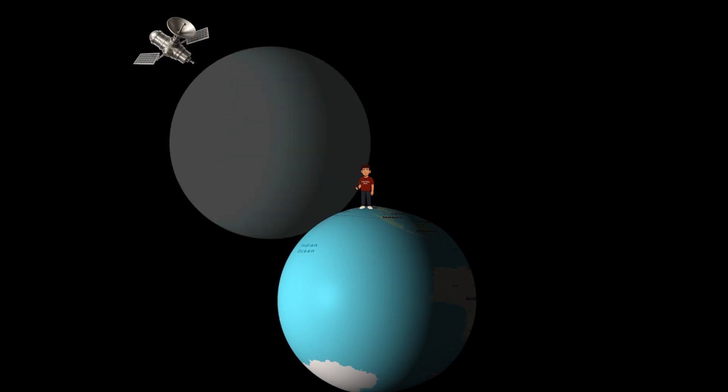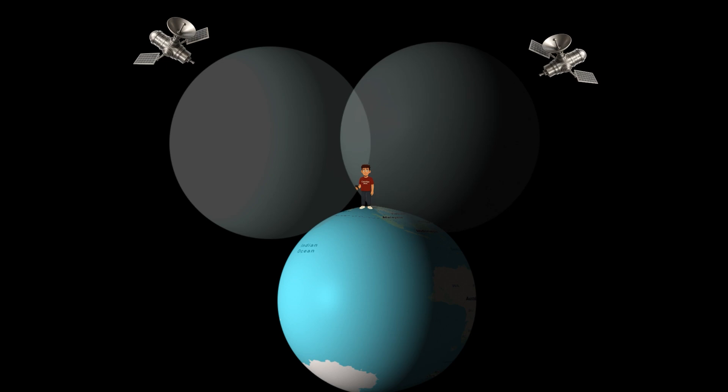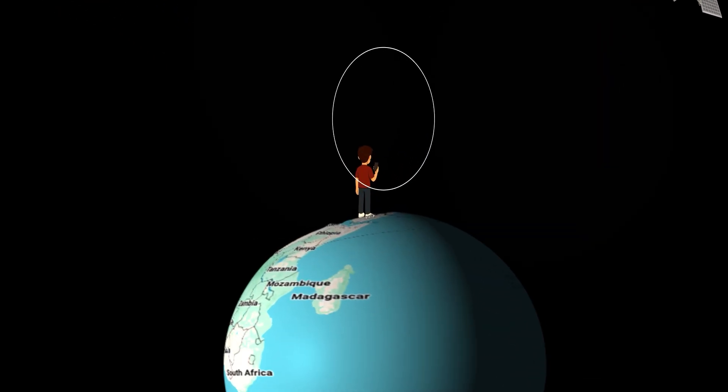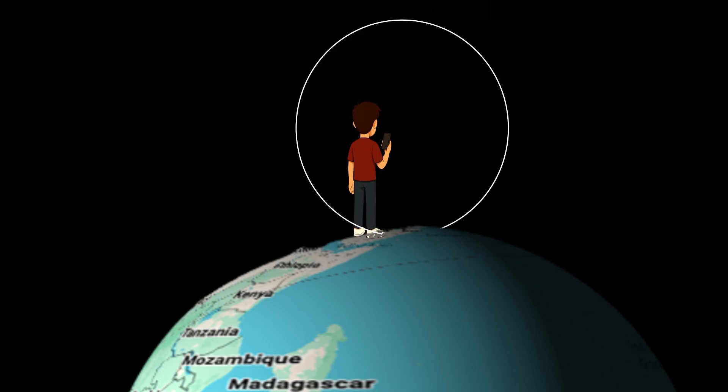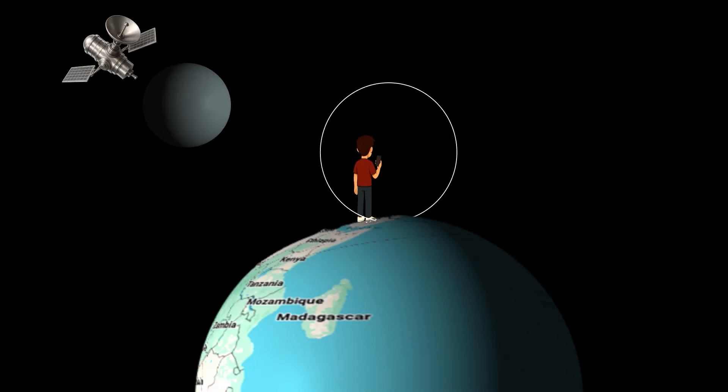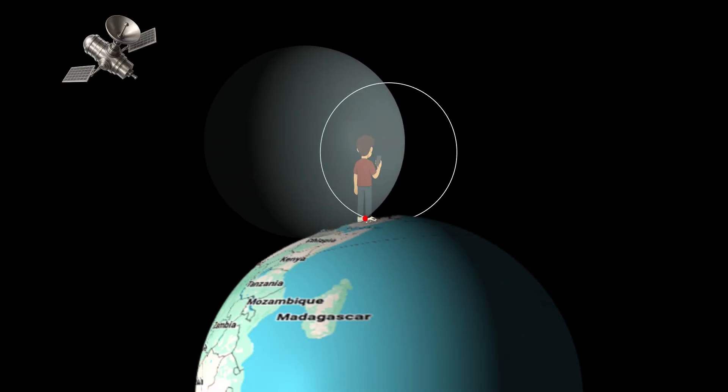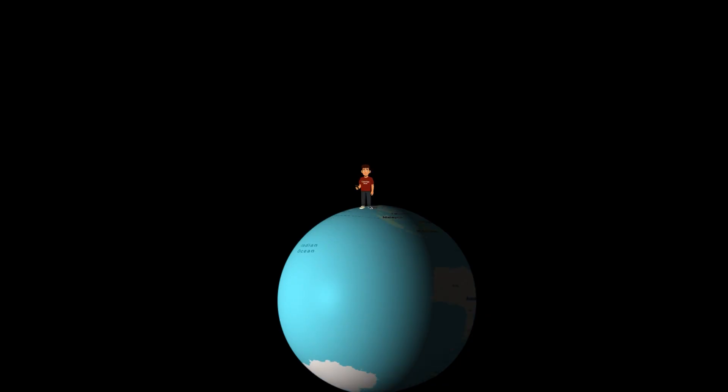The first satellite sends a signal. My phone hears it and measures how long it took to arrive. Multiply that time by the speed of light and you get a distance. That distance is a sphere, meaning I could be anywhere on this surface. A second satellite gives me another sphere. Now I am somewhere on this circle where the two spheres overlap. A third satellite narrows it to two possible points, one here on earth, the other floating in space. I am clearly not up there, so this is me.